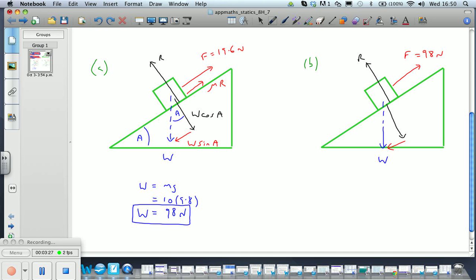And the components here: since A is the angle here, that's also the angle there, and so the component parallel to the slope is W sin A, and perpendicular to the slope is W cos A.